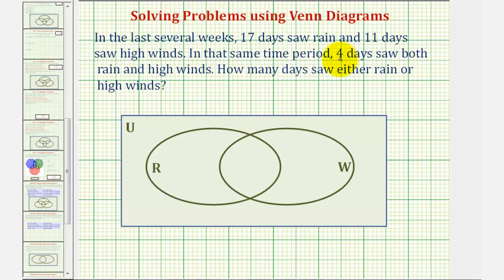Notice how we're told four days saw both rain and high winds, which means there will be four days in the intersection of set R and set W, or this region here. Again, four days go in this region because they saw both rain and high winds.